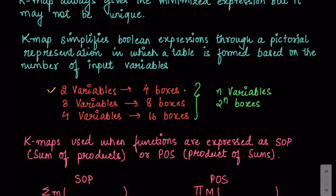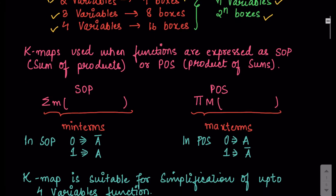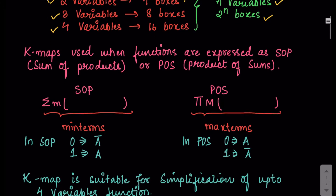If you have a 2-variable function the number of boxes is 4. For a 3-variable function it is 8 boxes, and for 4 variables it is 16. In a way it follows the formula that if you have n variables there are 2 to the power n boxes. K-map is used when the functions are expressed as SOP, that is sum of products, or POS, that is product of sums.